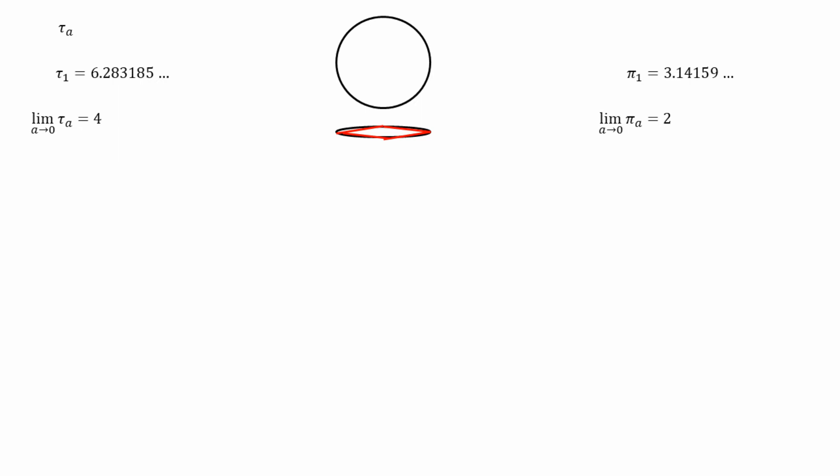It's easy to see why when you look at these red lines there. They make a sort of squashed diamond. And here's a plot of tau of a against a, and you can see it goes up from 4 to 2 pi.